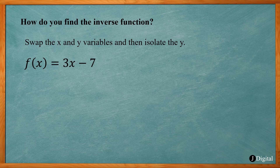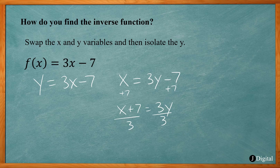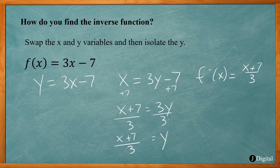So how do we actually find the inverse function? We swap the x and y variables, and then isolate the y. If I have f of x equals 3x minus 7, I can write it as y equals 3x minus 7. Swapping x and y gives x equals 3y minus 7. Adding 7 to both sides: x plus 7 equals 3y. Dividing both sides by 3 gives y equals the quantity x plus 7 all over 3. That's our inverse function, written in inverse notation as f inverse of x equals x plus 7 over 3.